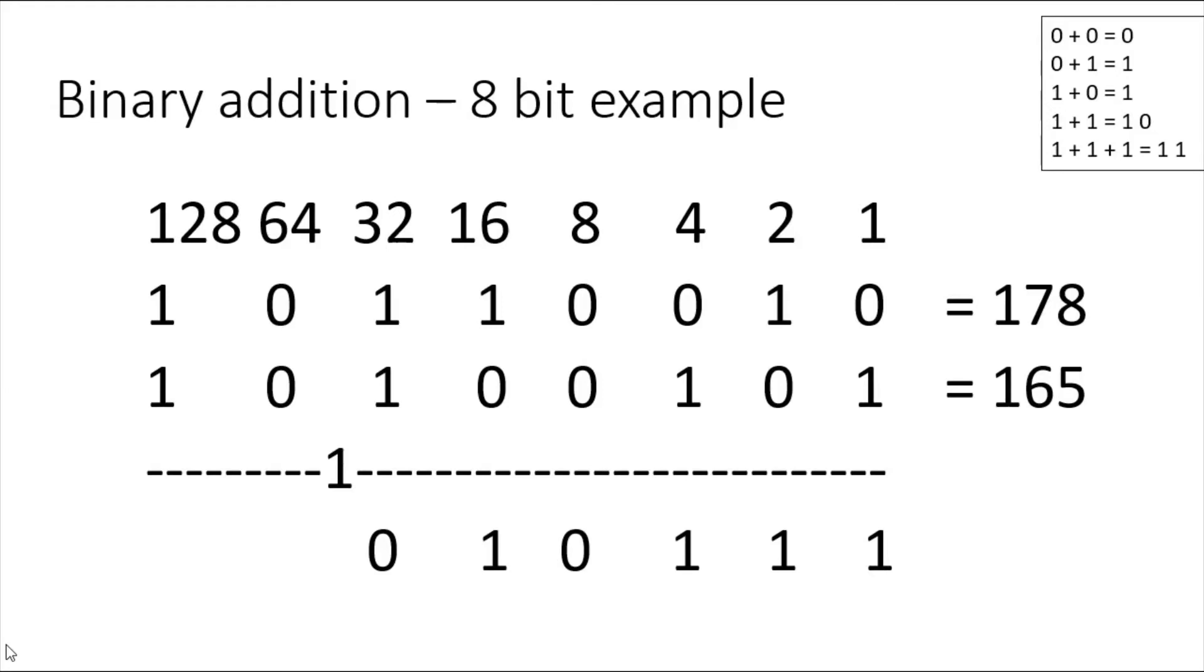So now I need to do this—this is now in position 64, that is zero plus one which is one. Now this last column one plus one, looking at the rules, one plus one is one zero. So you can see a little bit of an issue here: I've gone into the ninth bit and this is what's called an overflow, which we'll talk about in a moment.